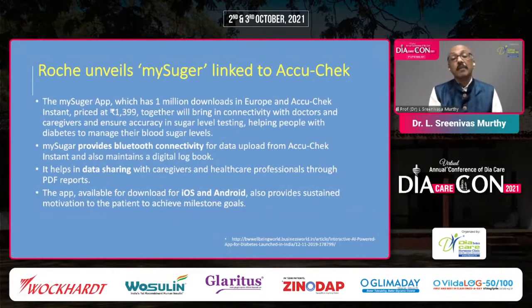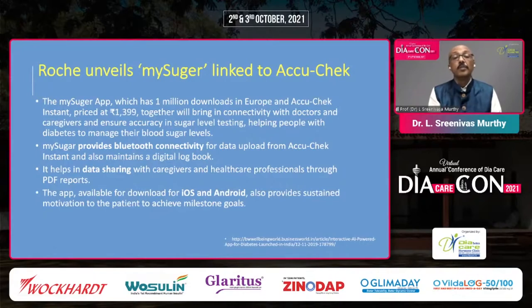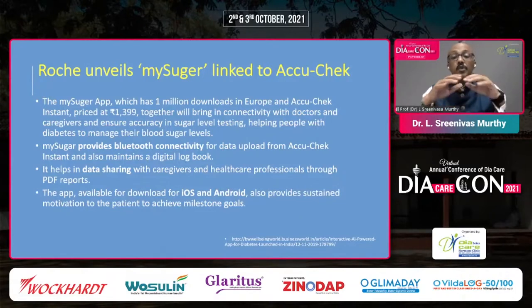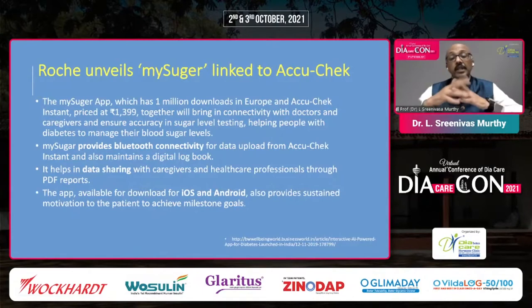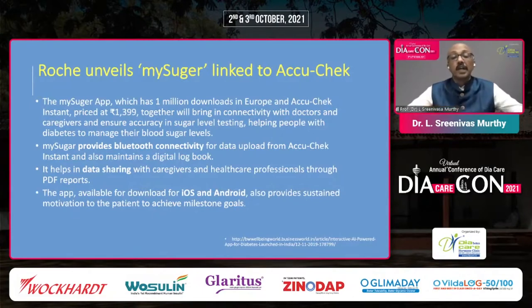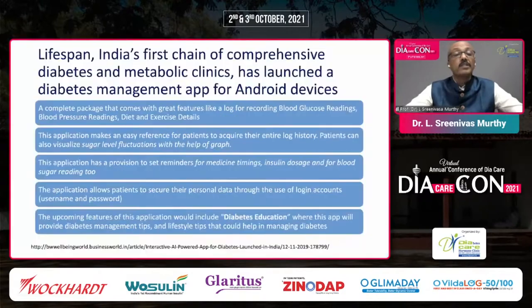The Roche MySugar app is one of the most commonly used, linked to the Accu-Chek device. This app has 1 million downloads in Europe. In India, it is priced at about 1,400 rupees. It enables connectivity with doctors and caregivers, ensures accuracy in sugar level testing via Bluetooth, and supports data sharing through PDF reports. It is available on both iOS and Android, though it has a one-time cost.